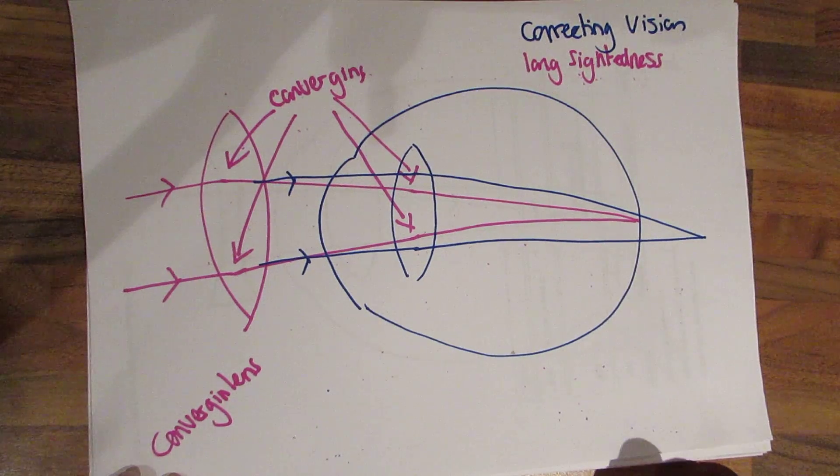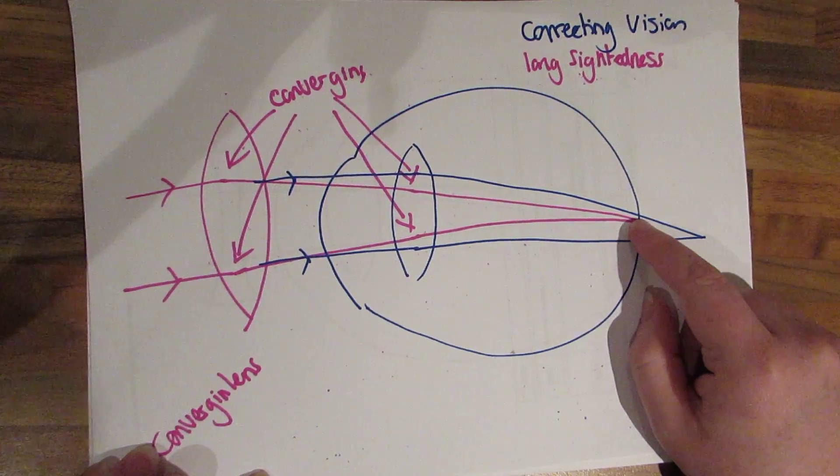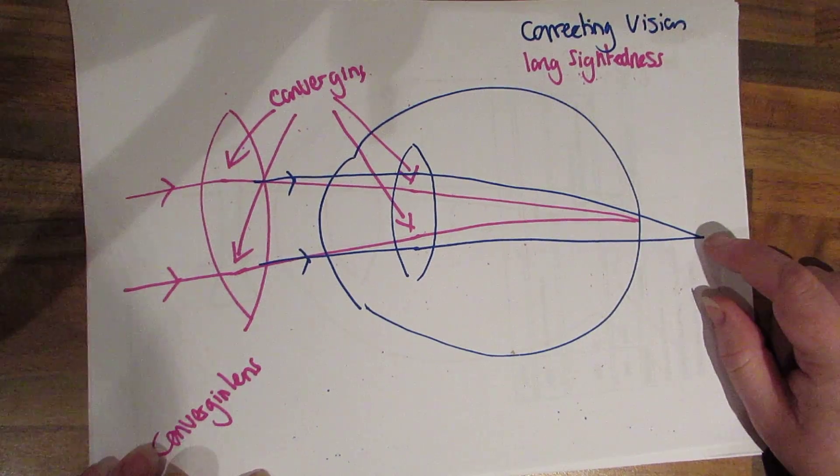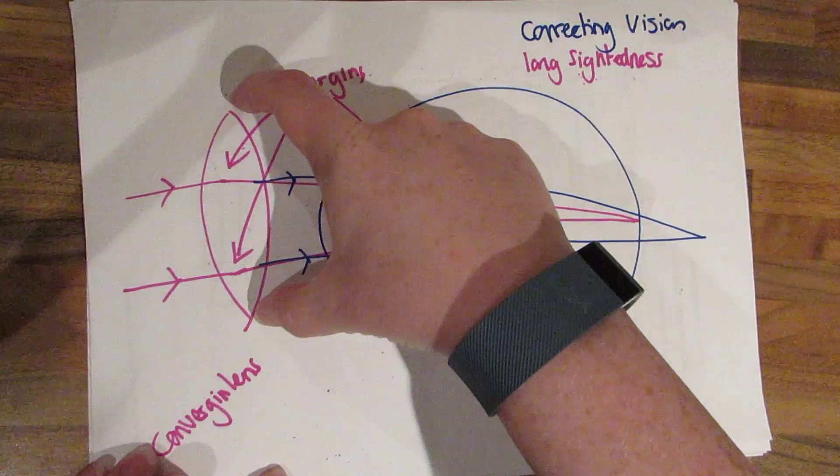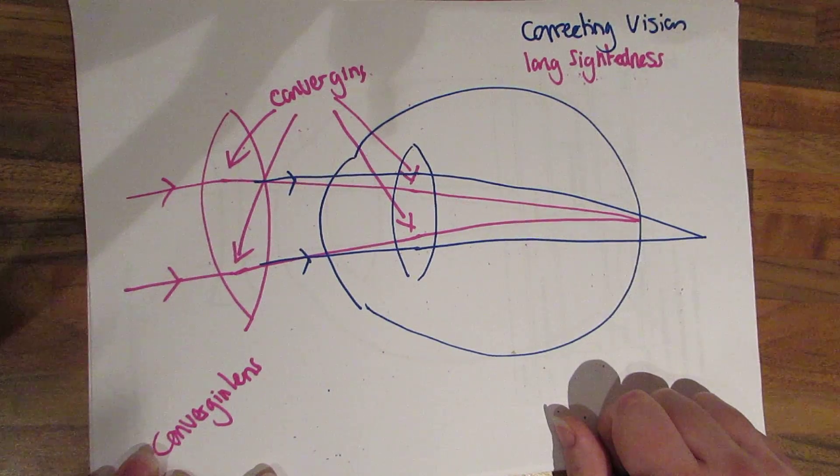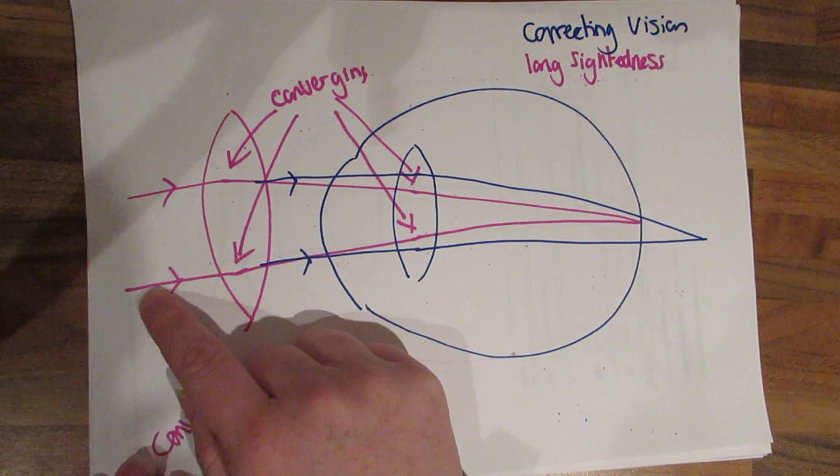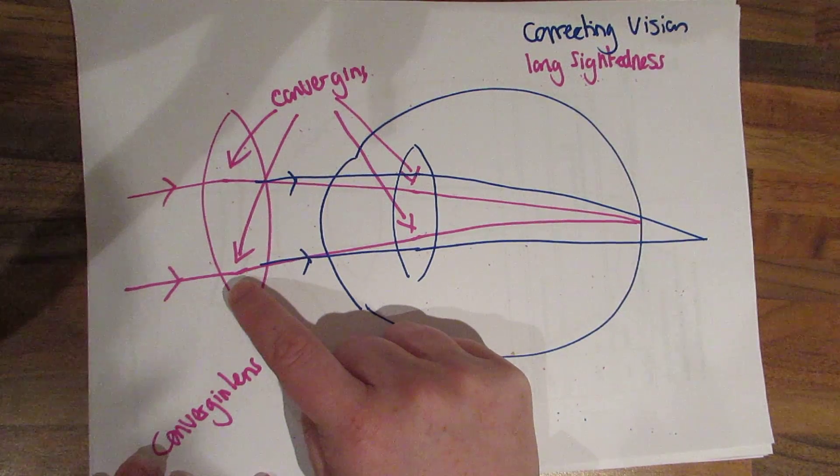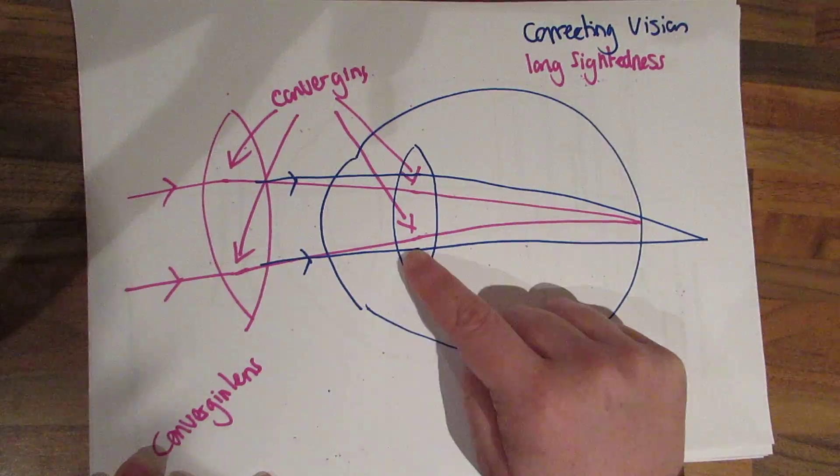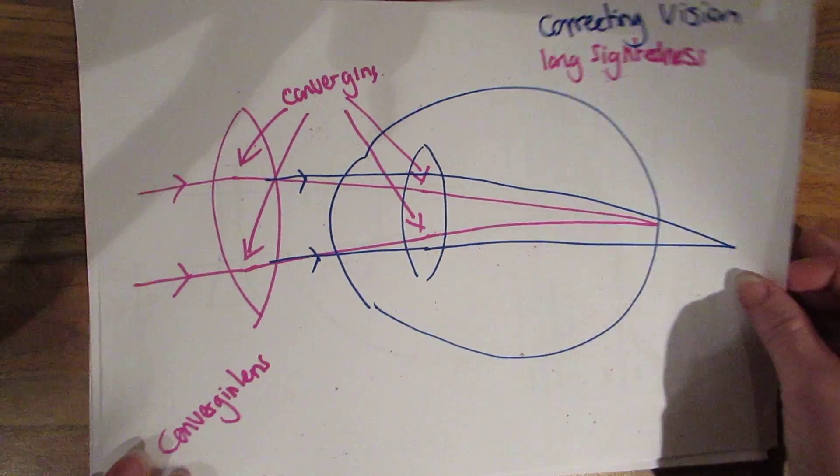So you need to know how to correct vision. In long-sightedness the image doesn't form on the retina, it forms behind the retina. And you can put a converging lens in front of it to bring the image forward so it actually focuses on the retina. If this comes up in an exam question you have to draw your line so it's really clear there's a convergence event here and a convergence event here as well. The examiners will be looking for this.